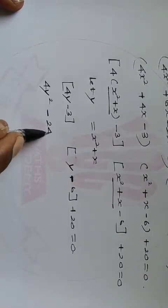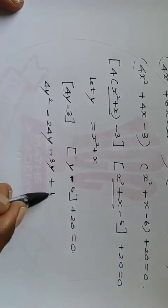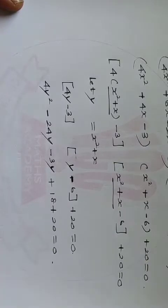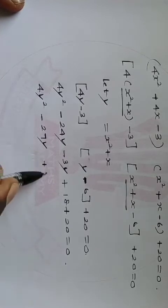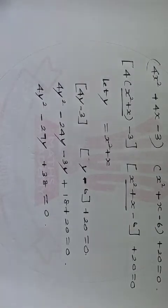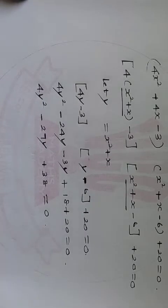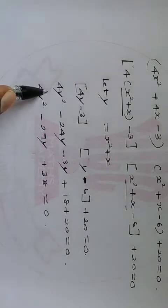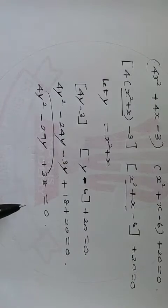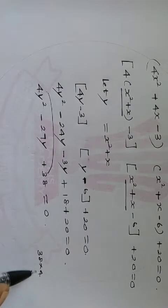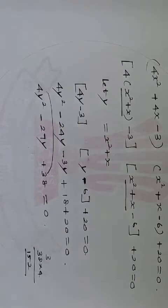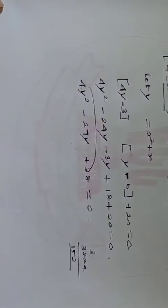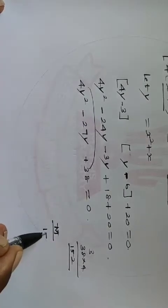So now we multiply this to get 4y² minus 24y minus 3y plus 18 plus 20 equal to 0. We are going to factorize. We multiply it by 4 to get 38, so we multiply 4 and 4, and 3 and 4 and 3. This gives 152.